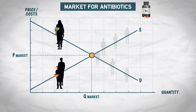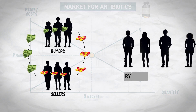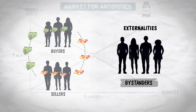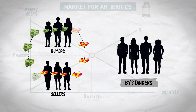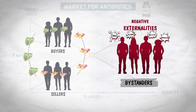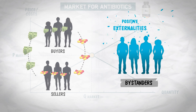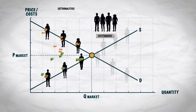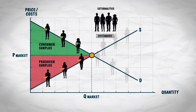But now we have a problem — those pesky superbugs. We have to introduce a new entity into our analysis: the bystanders. Bystanders are neither buying nor selling, but nonetheless they're affected by the purchase and use of antibiotics. The economic concept of externalities describes the effect of market trade on bystanders. When bystanders bear a cost, it's called a negative externality. When bystanders receive a benefit, that's called a positive externality. Either way, buyers and sellers do not typically consider externalities on other people. And that means the market equilibrium will maximize the sum of producer and consumer surplus, but not bystander surplus — and that's not good.